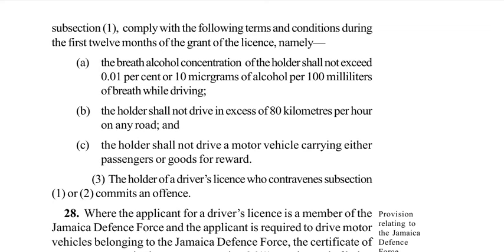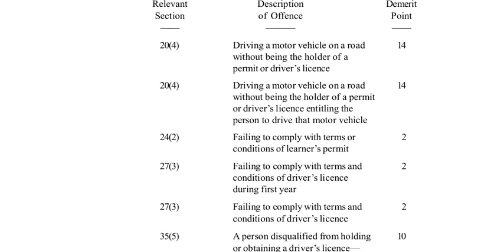Subsection 3 now confirms: the holder of a driver's license who contravenes subsection 1 or 2 commits an offense. Failure to comply with the terms and conditions of a driver's license is 2 demerit points under the same section — Section 27 subsection 3.